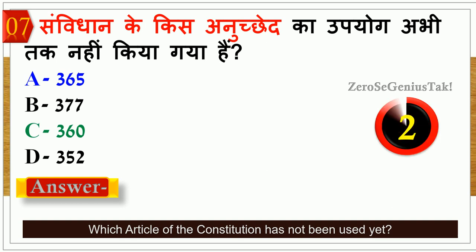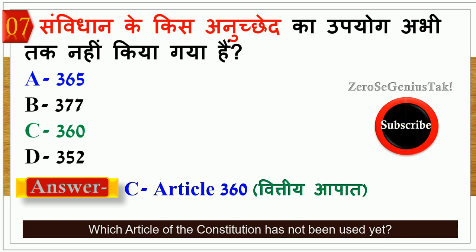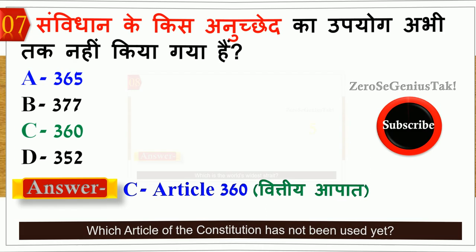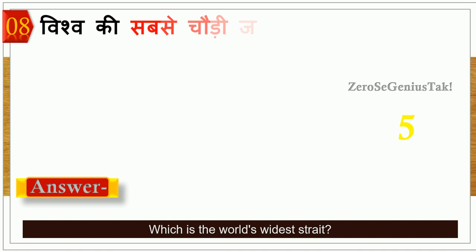Which article of the constitution has not been used? The correct answer is that this article of the constitution has not been used, and this article is related to the constitution.